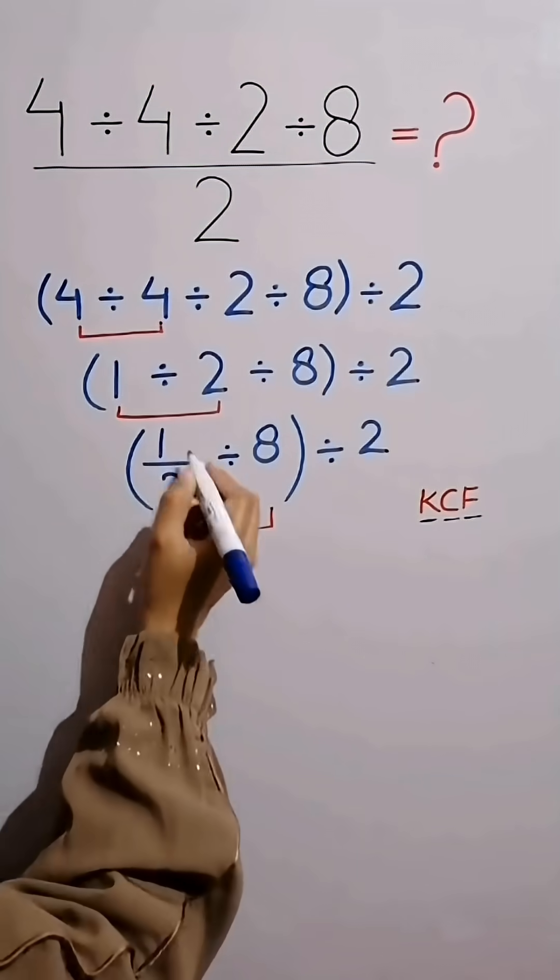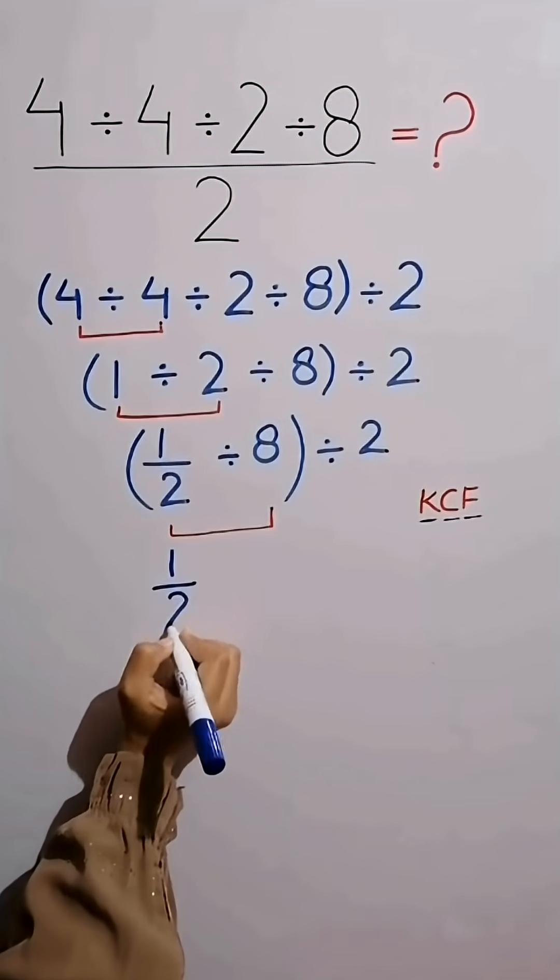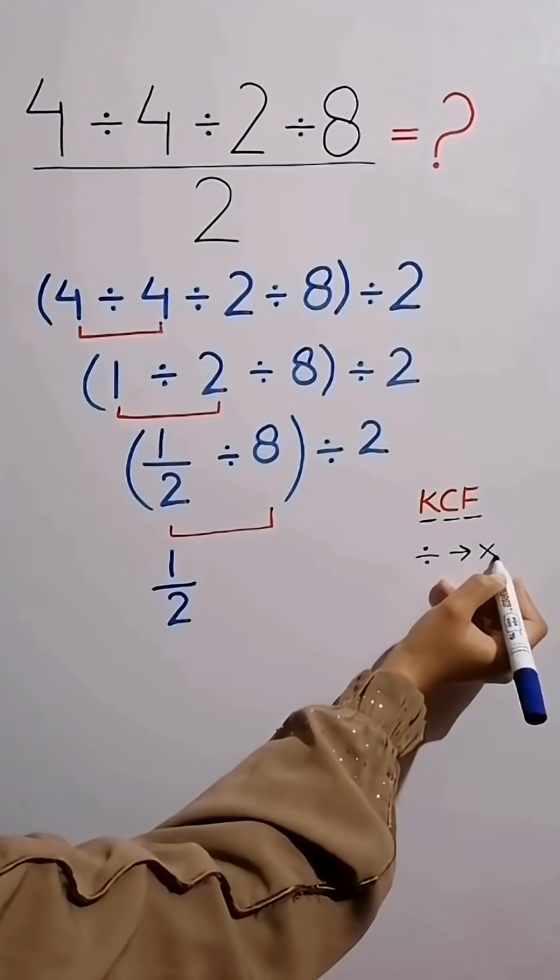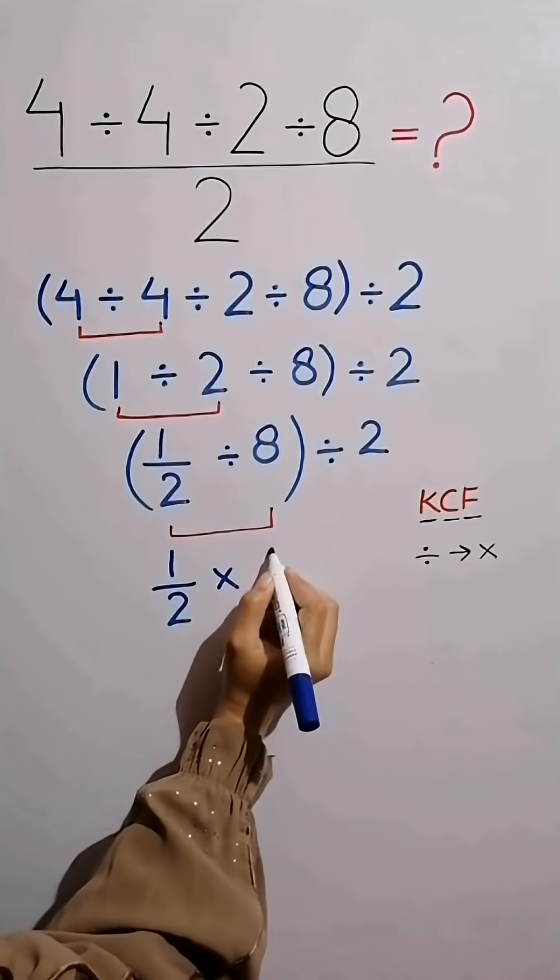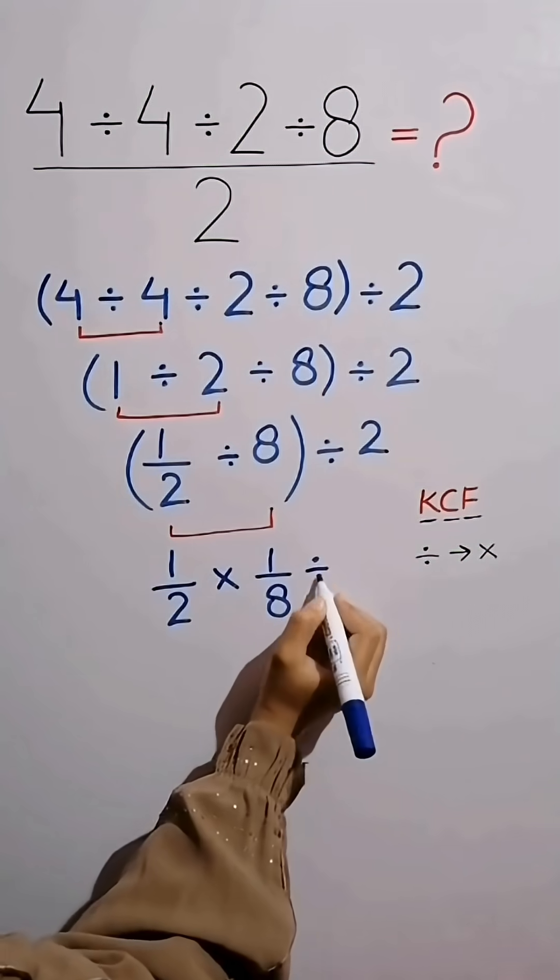Now according to KCF rule, keep the first fraction as it is, change division into multiplication, and flip the second fraction. 8 becomes 1 over 8. And bring down divided by 2.